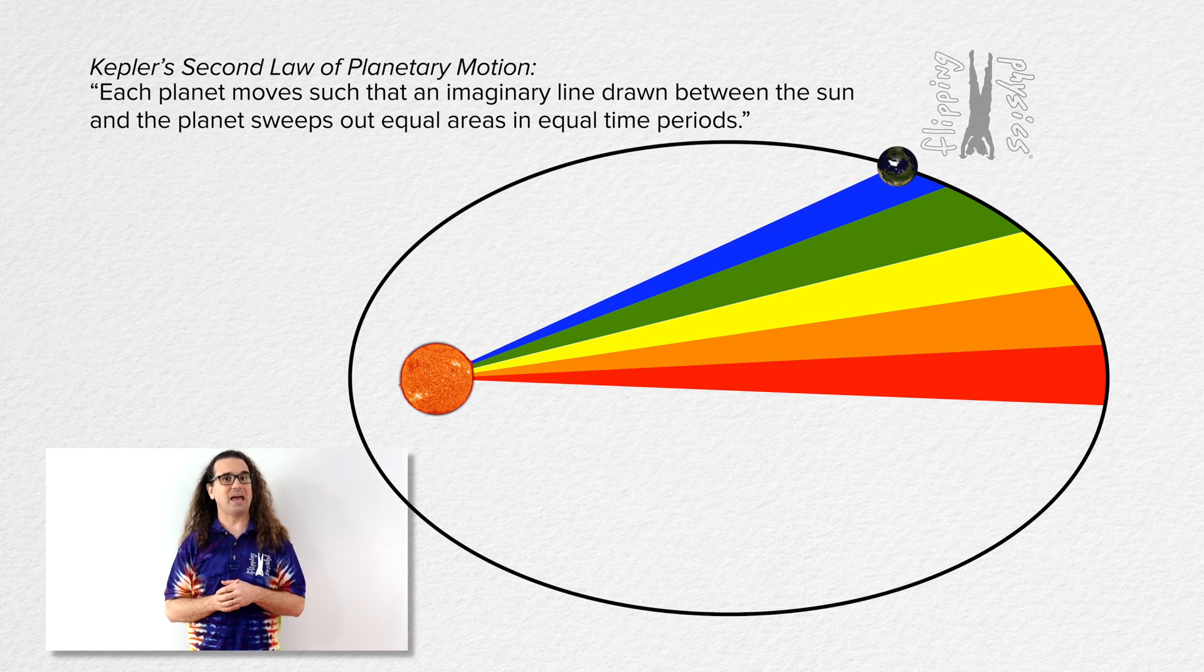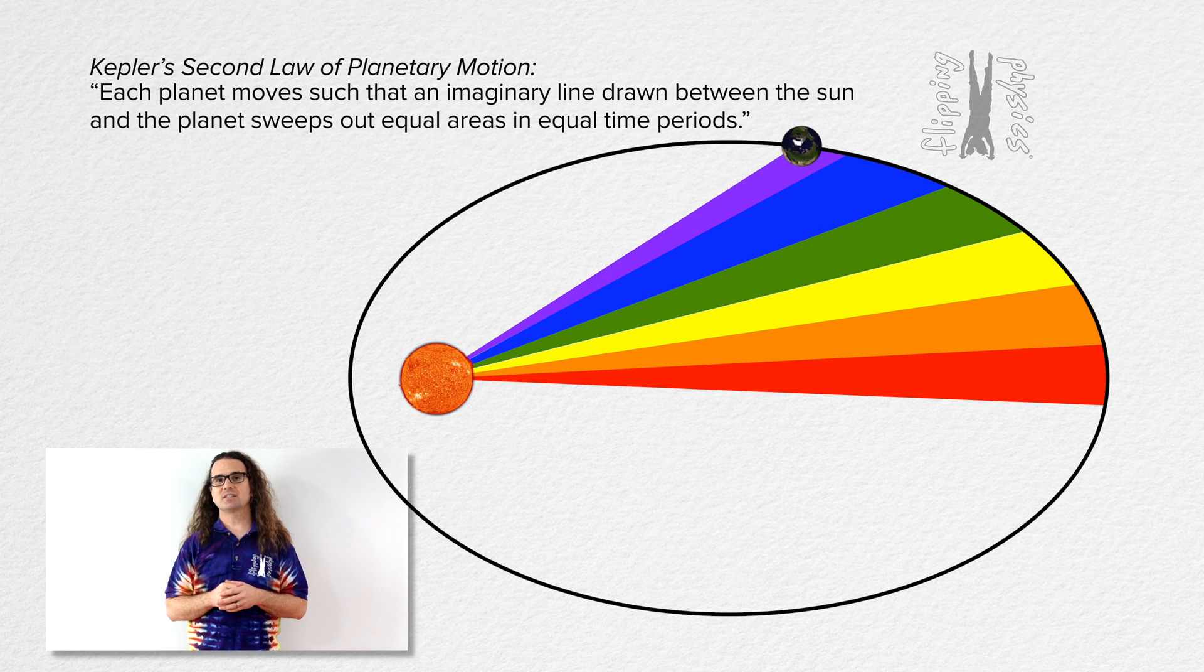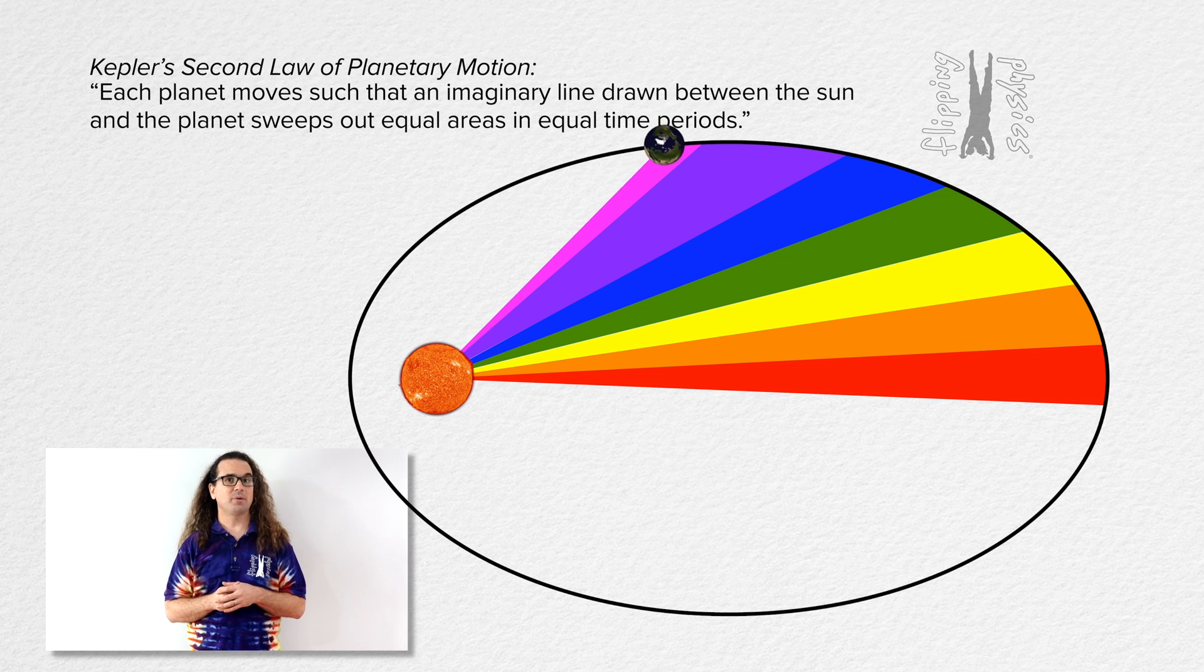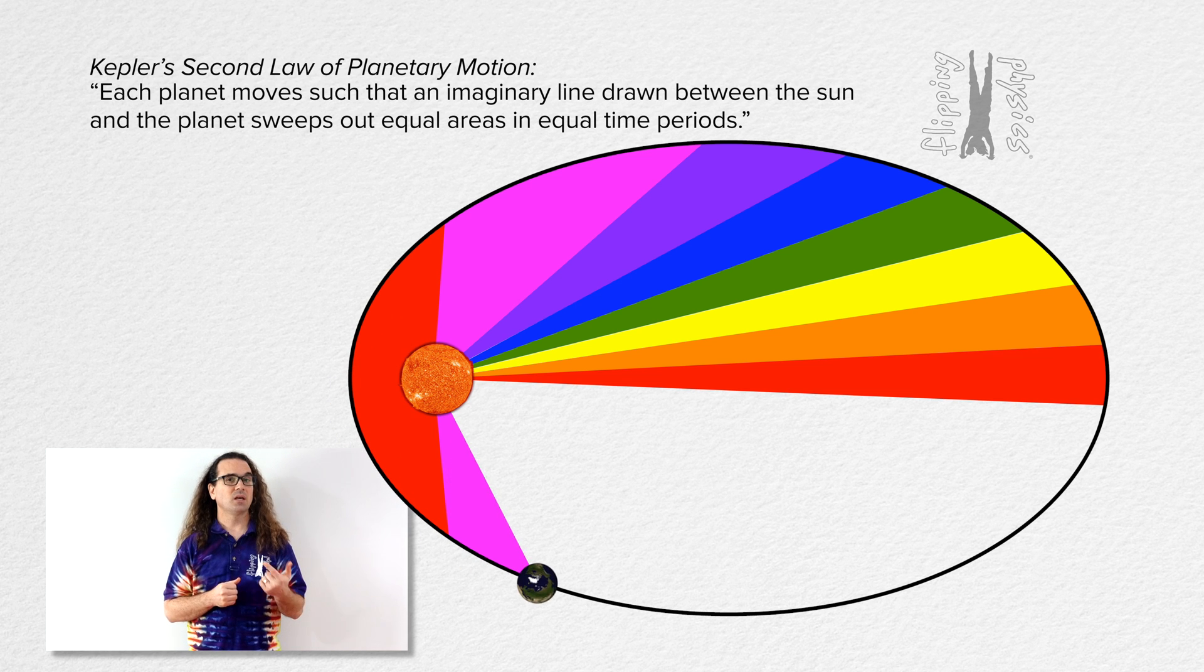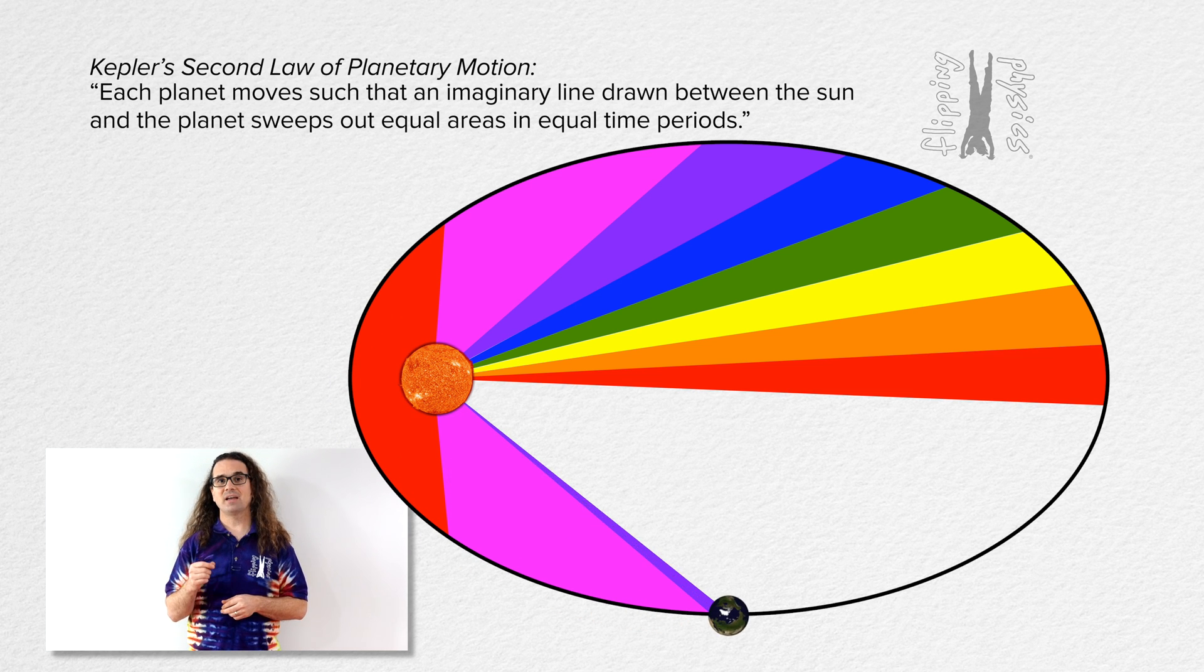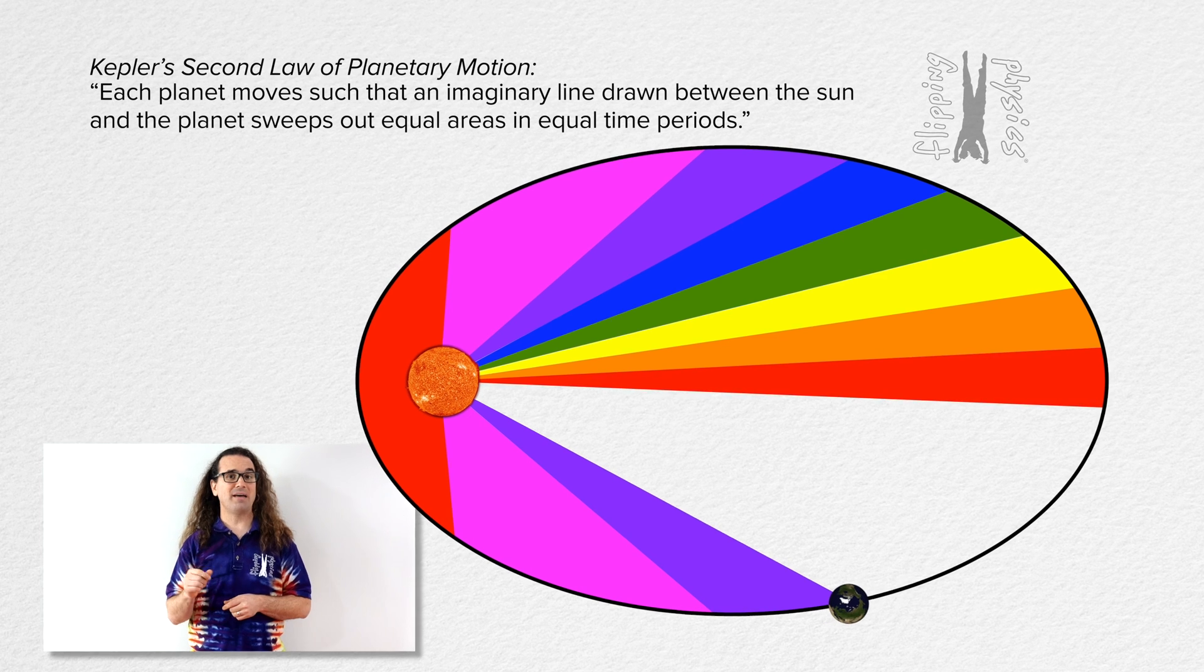As you can see in the animation, Kepler's second law states that during an equal time period, the area swept out at any point during an elliptical orbit will be the same. In other words, every area in the animation has the same value.